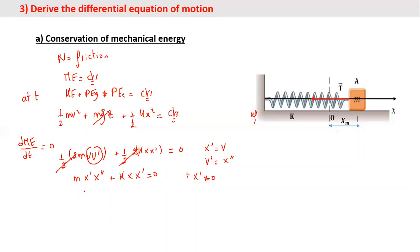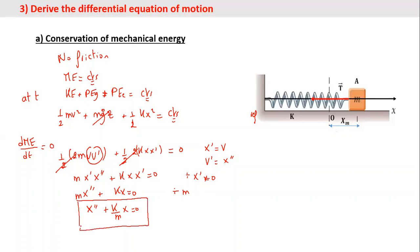We get m · x″ plus k · x equals zero. Dividing through by mass m, this becomes: x″ plus (k/m) · x equals zero. This is a second-order differential equation — second order because we have a double prime — and it is a differential equation because we have a relation between a derivative and the variable itself.